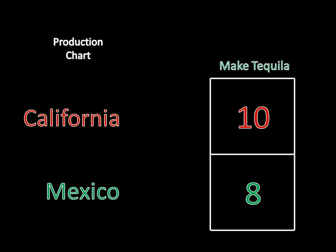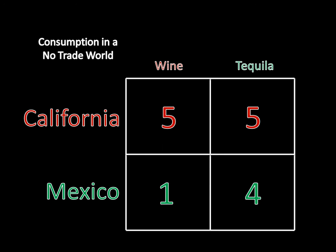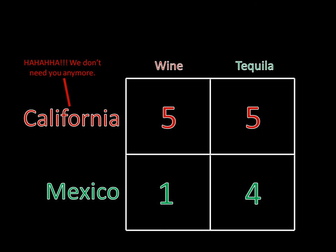So Mexico has a comparative advantage in making tequila, and California has a comparative advantage in making wine. Because of this, we're going to see actual benefits from trade. Let's look at this world without any trade: California makes five bottles of wine and five bottles of tequila and consumes both, and Mexico makes one bottle of wine and four bottles of tequila. If you initially thought trade just isn't going to be beneficial, you might laugh and say, 'Hey Mexico, we're better than you at everything, we don't need you anymore.' But Mexico would respond by saying that doesn't make any sense — and here's why.